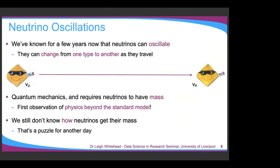We've known for a while now that neutrinos can oscillate — this got the Nobel Prize around 2015-2016. By this I mean they can change from one type to another as they travel. We can start off with a muon neutrino, and if you measure your beam at some distance away, you might find it's turned into an electron neutrino. This is a purely quantum mechanical process that requires neutrinos to have mass. This is the first and currently only observation of physics beyond the standard model. When people say no BSM physics has been discovered, they conveniently forget that neutrino oscillations are BSM. We don't know how they get their mass — all other particles get theirs through the Higgs mechanism, but it doesn't work for neutrinos. That's a puzzle for another day.